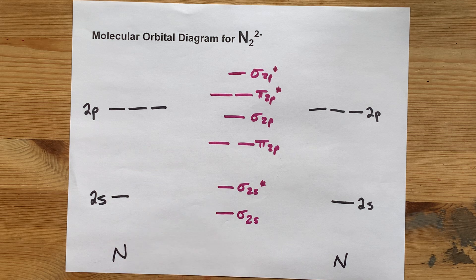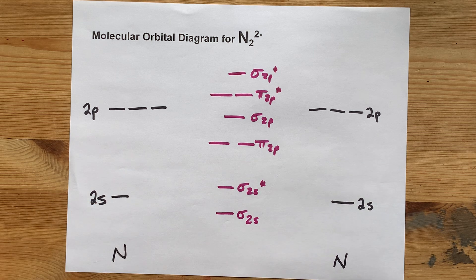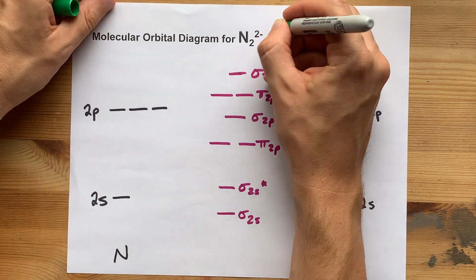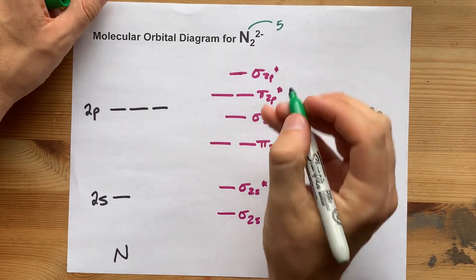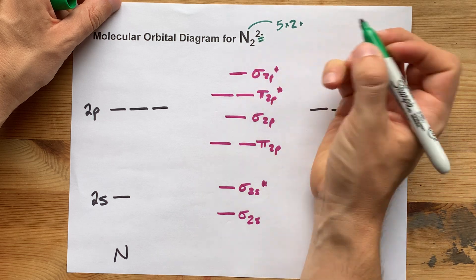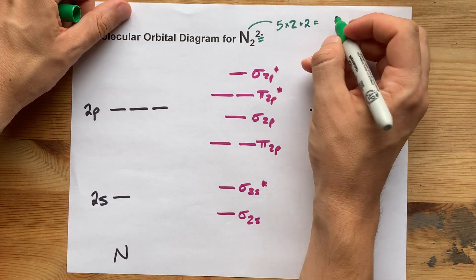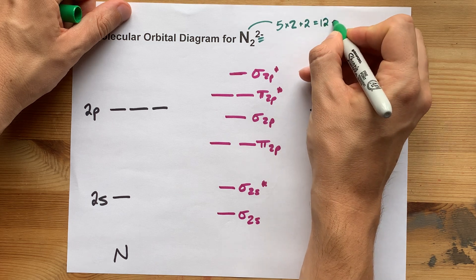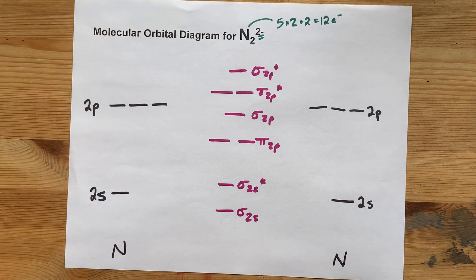You're going to have to fill this with electrons — be careful about how many there are. I haven't included the inner shell here, so that means nitrogen is bringing five valence electrons each. There are two of them, and because of this minus-two charge, there are two extra bonus electrons. That gives me 12 valence electrons total for this particular molecular orbital diagram.